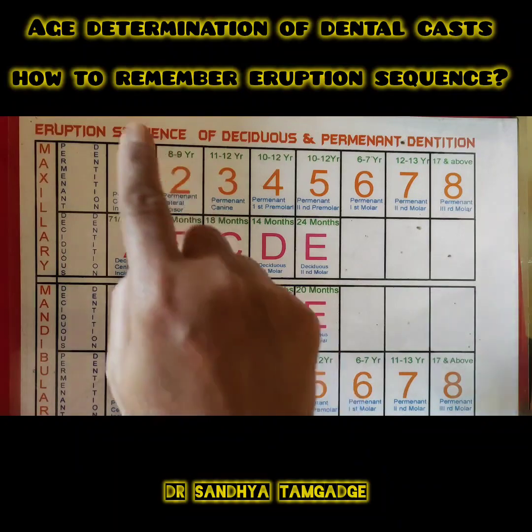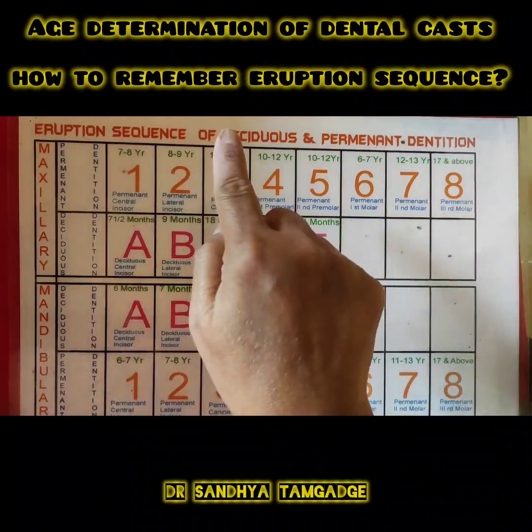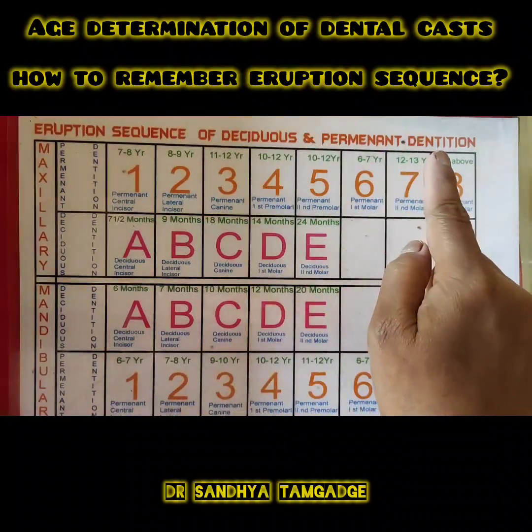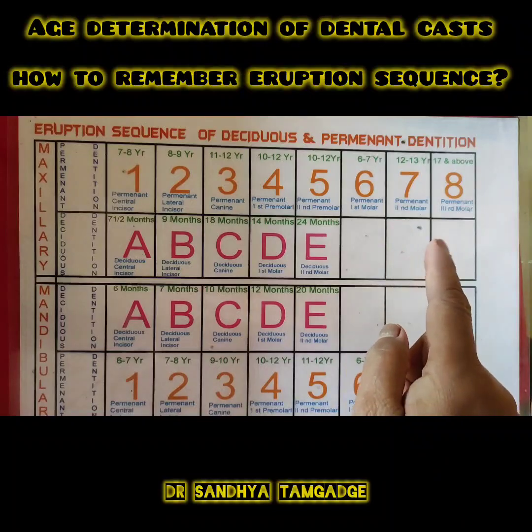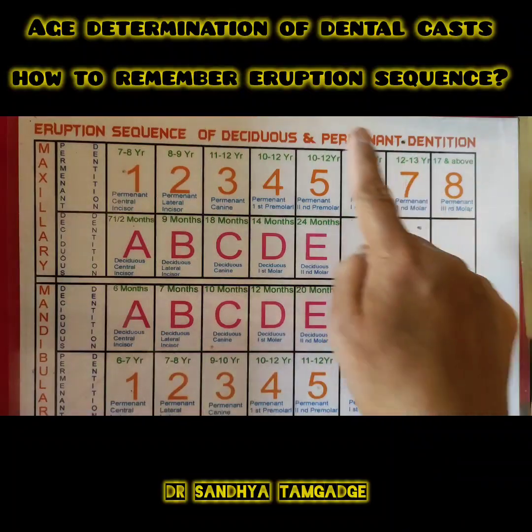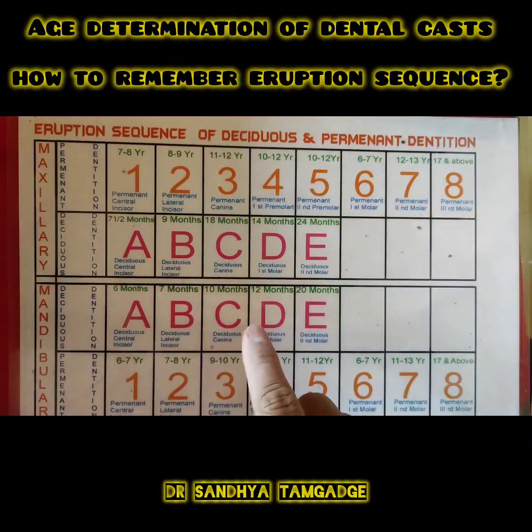The title is 'Eruption Sequence of Deciduous and Permanent Dentition.' Before we start, we should first understand the layout of this chart.